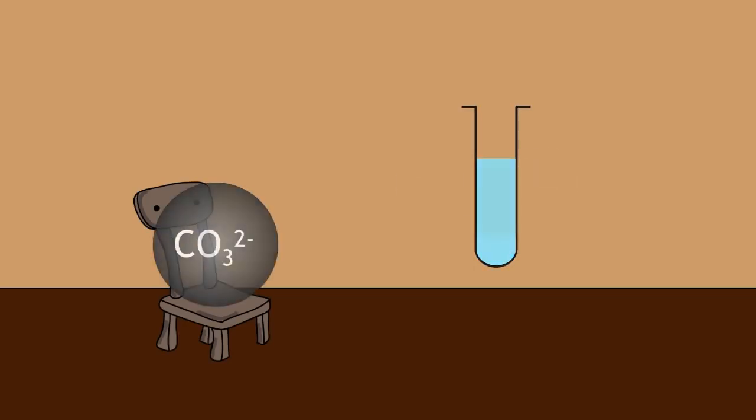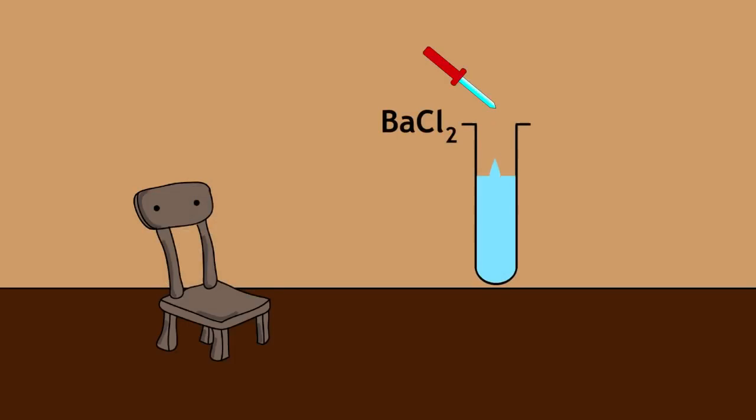The production of carbon dioxide from the addition of a dilute acid confirms the presence of carbonates. If a white precipitate is formed from the addition of an aqueous barium solution, this means that sulfates are present.